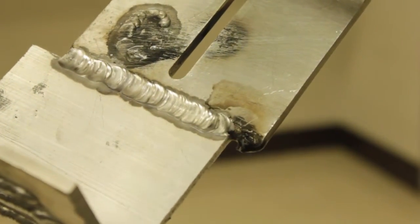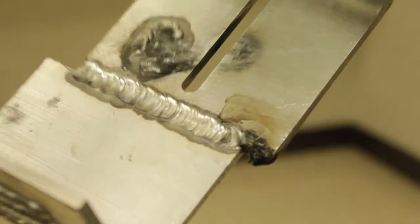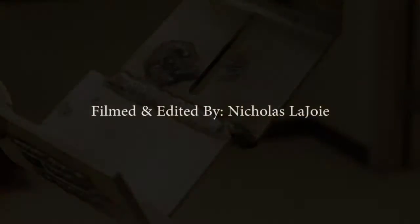Moving the tungsten slightly side to side as you move forward helps to keep both sides bridged by the puddle. Once you are done, make sure to cool the part in a sink or allow sufficient time for the part to cool before touching it.